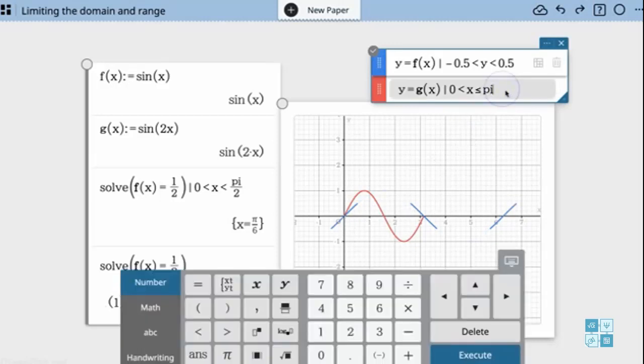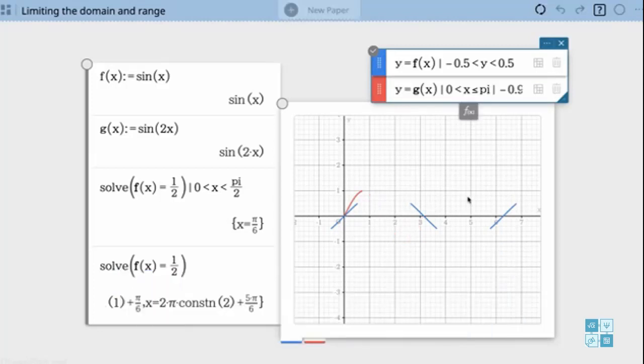I can do the same by adding a range restriction along with a domain restriction. So on the next one on the sine of 2x I'm going to limit that to be between negative 0.9 which is less than x which I'll go less than or equal to 0.7. So now I've limited both my domain and my range on this function.